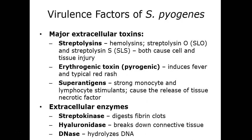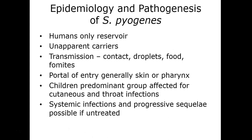Humans are the only reservoir for Streptococcus pyogenes, and transmission can happen through contact, droplets, or even food. It is usually acquired through either the skin or the pharynx. Children are really the predominant group for most cutaneous and throat infections. Sequelae — more prolonged secondary infections — can result if streptococci infections go untreated.